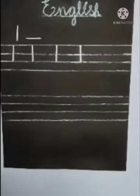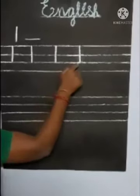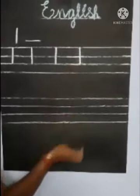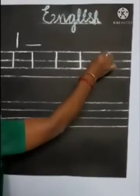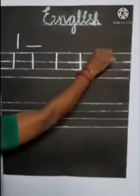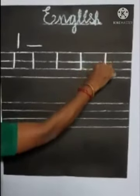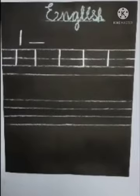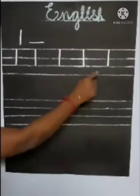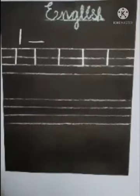This is standing stroke. Do you all understand this? Let's try again. Put your pencil in first limit and put a straight line to third limit. This is standing stroke.